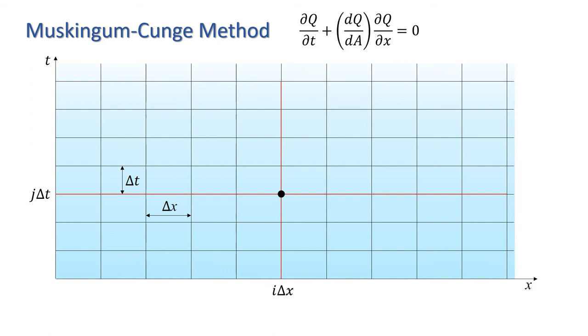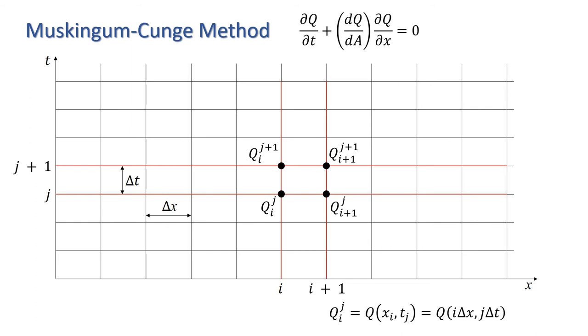I'm going to use the notation where a subscript denotes the spatial direction and superscript the time step, i.e., q_i^j is the discharge evaluated at position x_i and time t_j, where x_i is i·delta x and t_j is j·delta t. The Muskingum-Cunge method uses values of q along the i-th and (i+1)-th grid line in the spatial dimension and the j-th and (j+1)-th time step. Thus, we will use values of q at these four points. Let's focus in now on our computational cell.